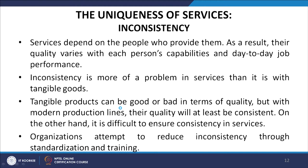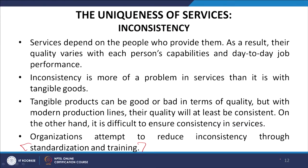Another I is inconsistency. Services depend on the people who provide them. As a result their quality varies with each person's capability and day-to-day job performance. Inconsistency is more of a problem in services than with tangible goods. Tangible goods can be produced with at least consistent quality through modern production lines. Organizations attempt to reduce inconsistency through standardization and training of service personnel.